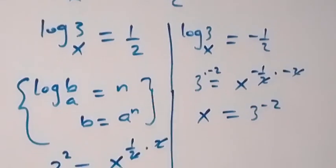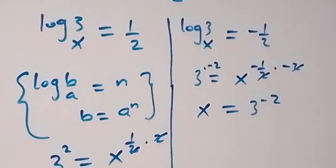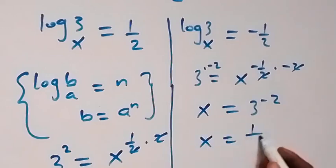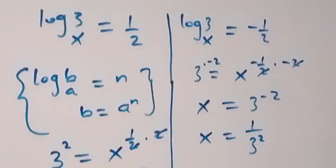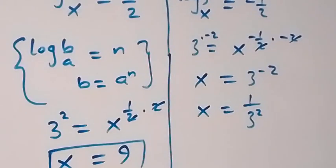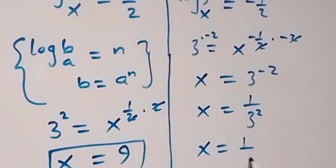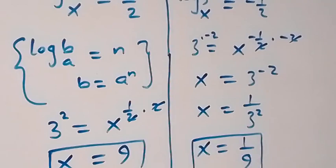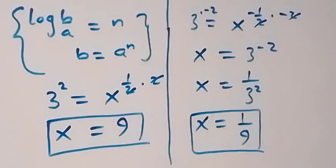From the law of indices, x equals 3^(−2), which is the same as x equals 1 over 3^2, giving x equals 1 over 9. So we also have x equals 1/9 here, which is the same answer as from the first method.